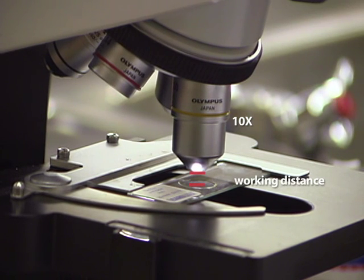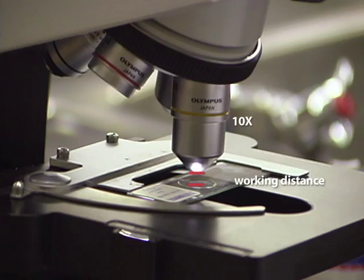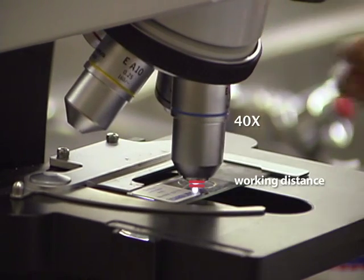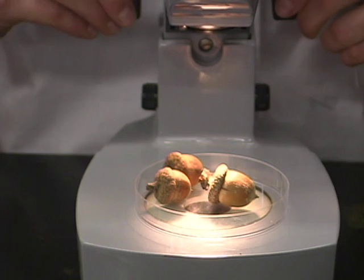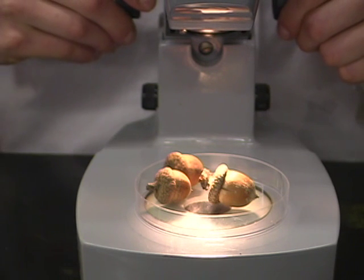This causes the working distance, the space between the object and the objective lens, to decrease. In stereo microscopes, the working distance is very large, several centimeters.